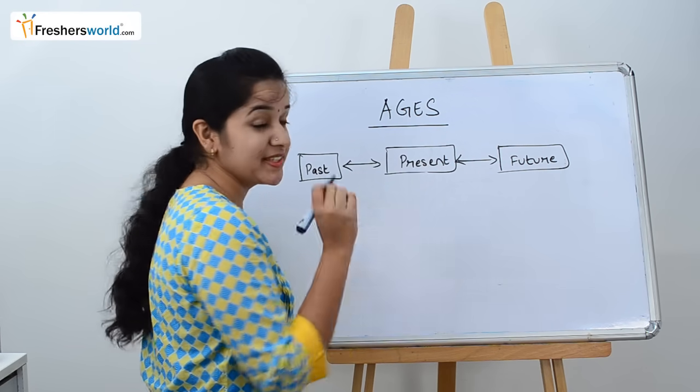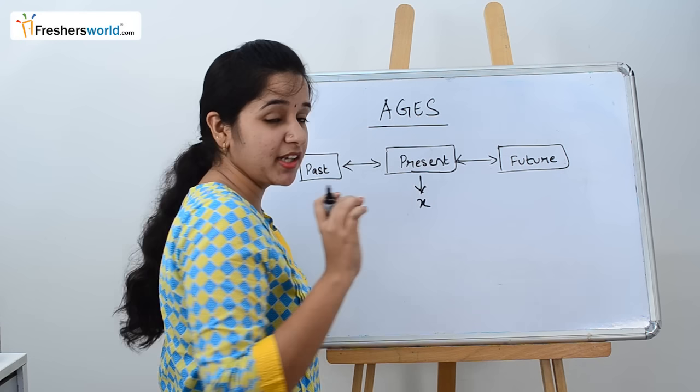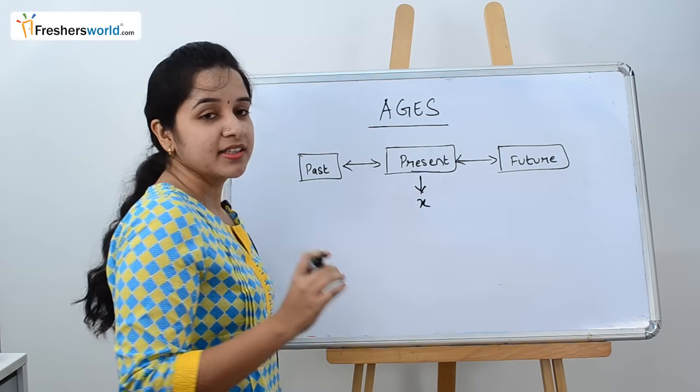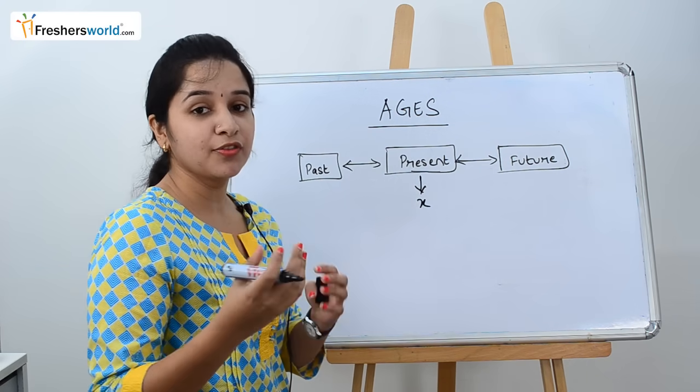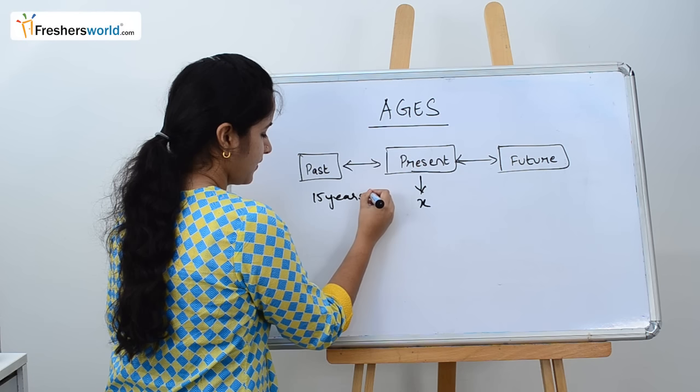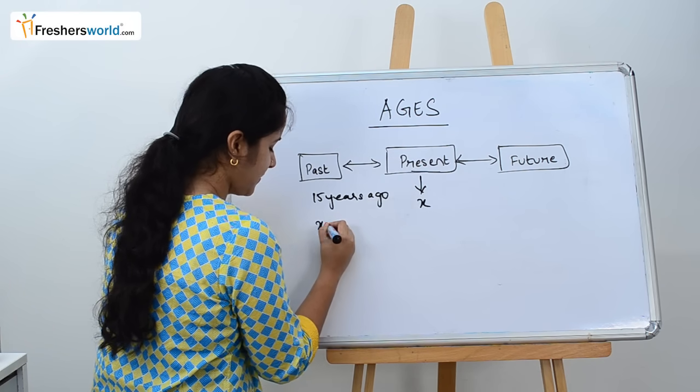Let's always take present age as X. Whatever the type of problem, you should always take the present age as X. If they are telling Ram or X is 15 years ago, you do X minus 15.